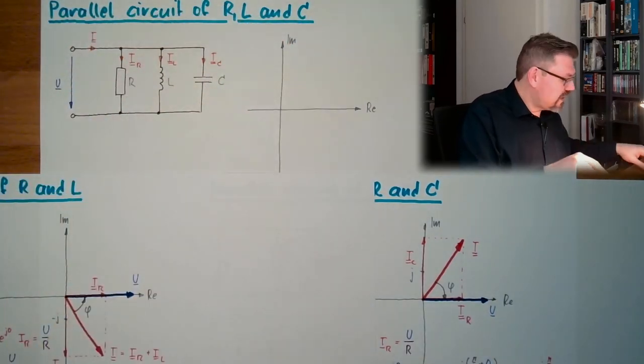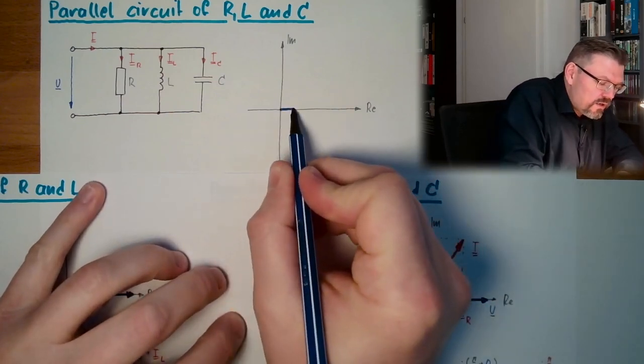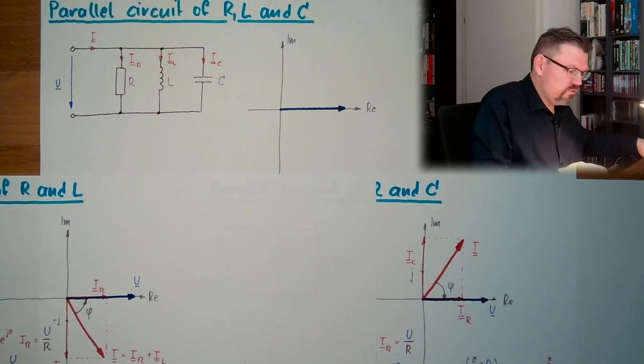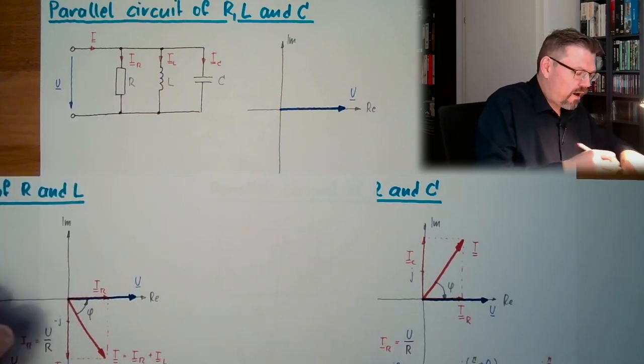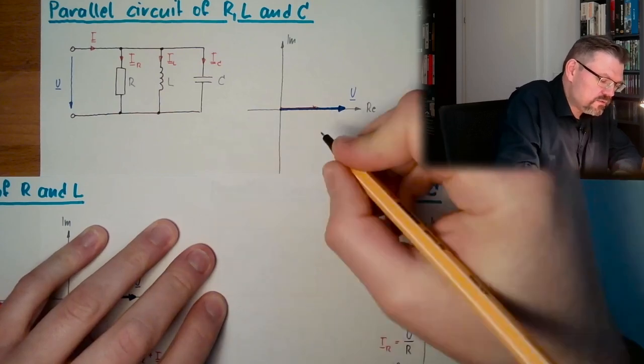We always start with our U. So I'll draw my U in here, in this direction. This is the voltage. Then I have my current through R, IR, going in this direction somewhere. Here is my IR.